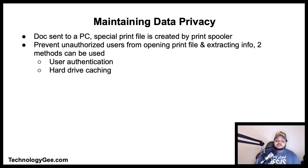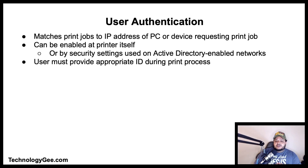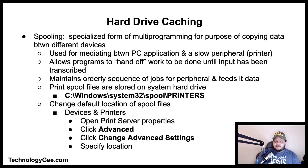When a document is sent to a computer, a special print file is created by the print spooler. To prevent unauthorized users from opening the print file and extracting information, two methods can be used: user authentication and hard drive caching. User authentication matches print jobs to the IP address of the requesting computer and can be enabled at the printer itself or through security settings on Active Directory-enabled networks. When enabled, the user must provide appropriate identification during the print process.